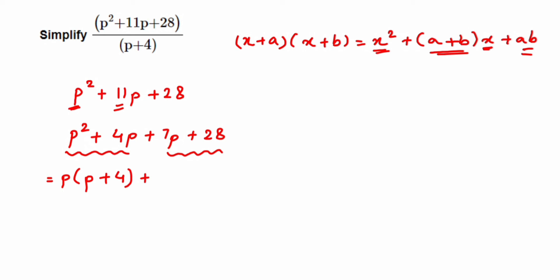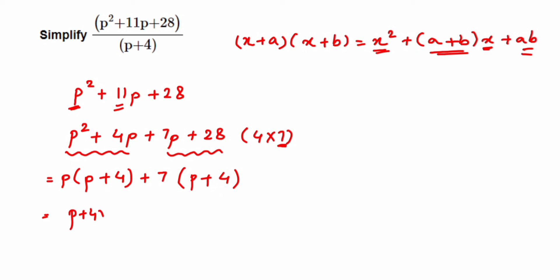In the second group, 7p and 28: since 28 = 4 × 7, the common factor is 7. Taking 7 out gives 7(p + 4). Now the full expression is p(p + 4) + 7(p + 4). We can factor out (p + 4) from both terms, leaving (p + 4)(p + 7). That is how the numerator is factorized.